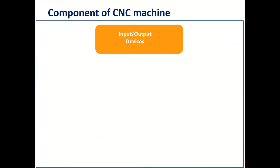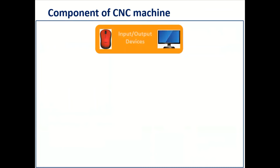The first component — the input/output device — is a unit through which the part program is fed to the CNC tool system and the required output is taken out. It basically consists of a monitor and a keyboard. The monitor may be a CRT or an LED and is used to indicate the current status of the program as it is being executed.